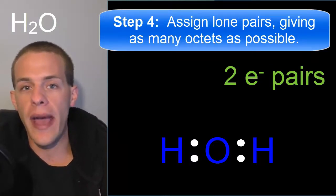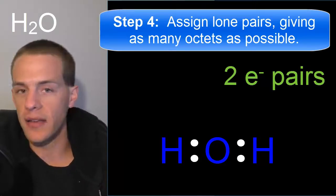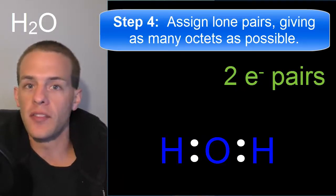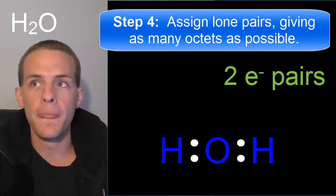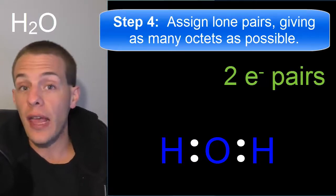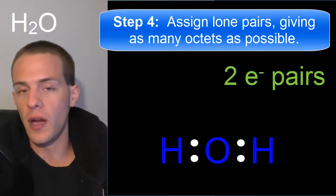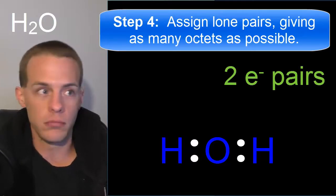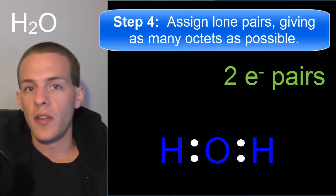The next step after making single bonds is to assign pairs of electrons as lone pairs on atoms, giving octets to as many atoms as possible. An octet is eight electrons around an atom — a noble-gas-like, low-energy stable configuration. When you have multiple atom types and need to decide which gets lone pairs first, it's the element with the highest electron affinity — the ones highest and rightmost in the periodic table.